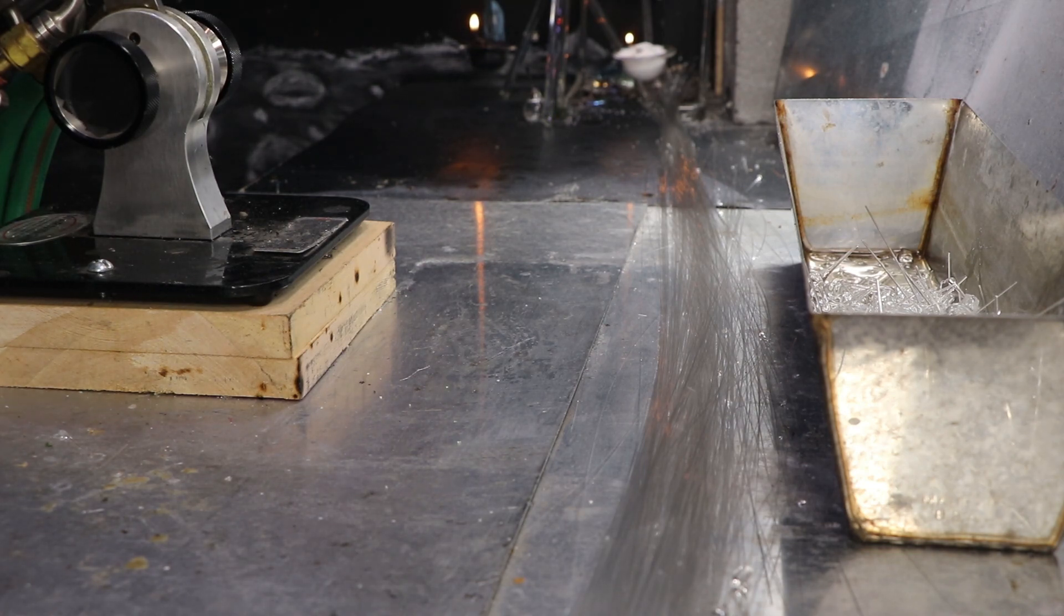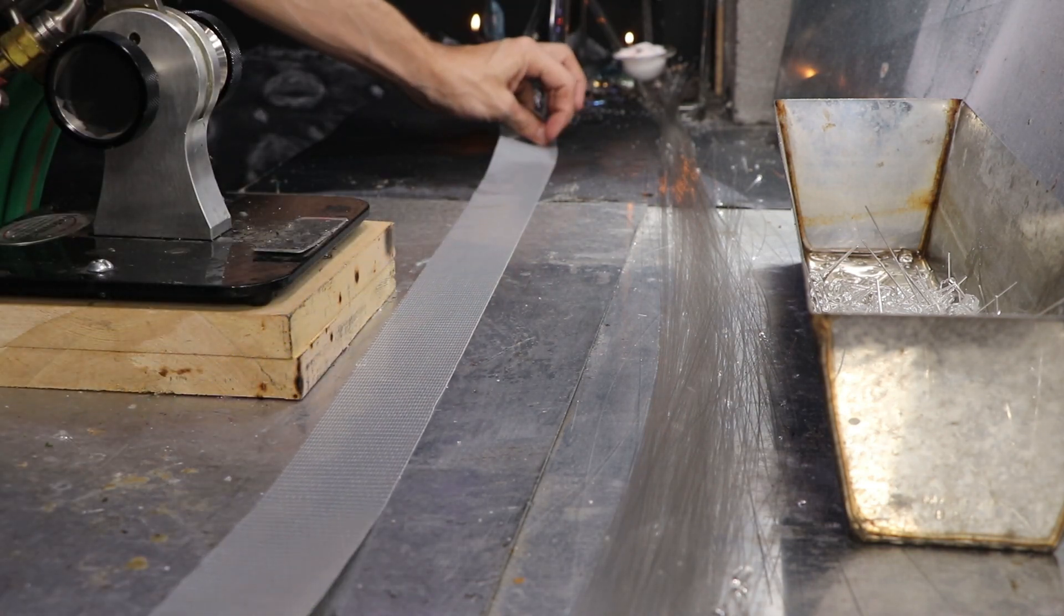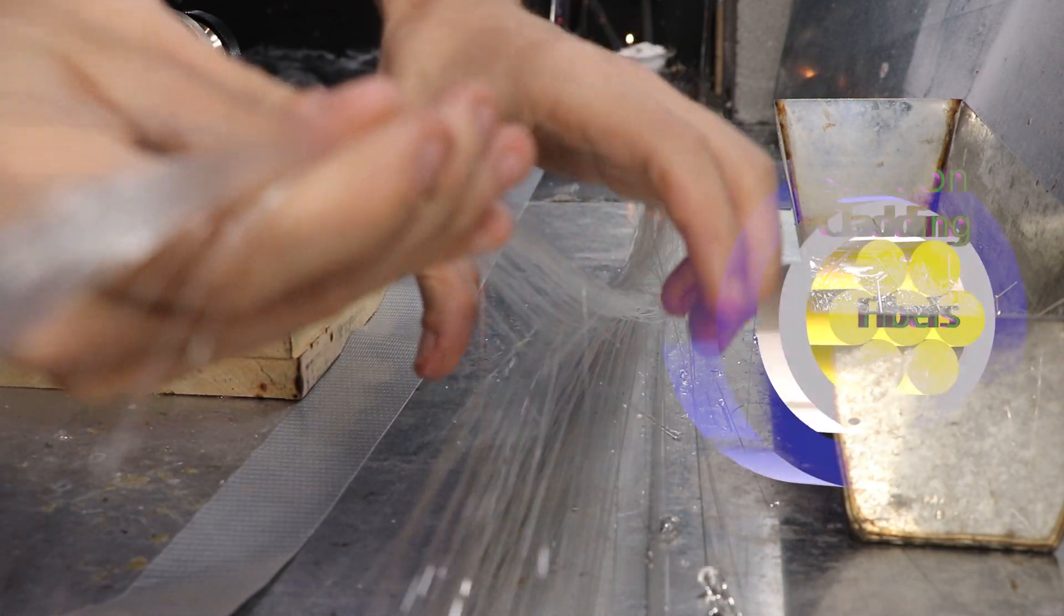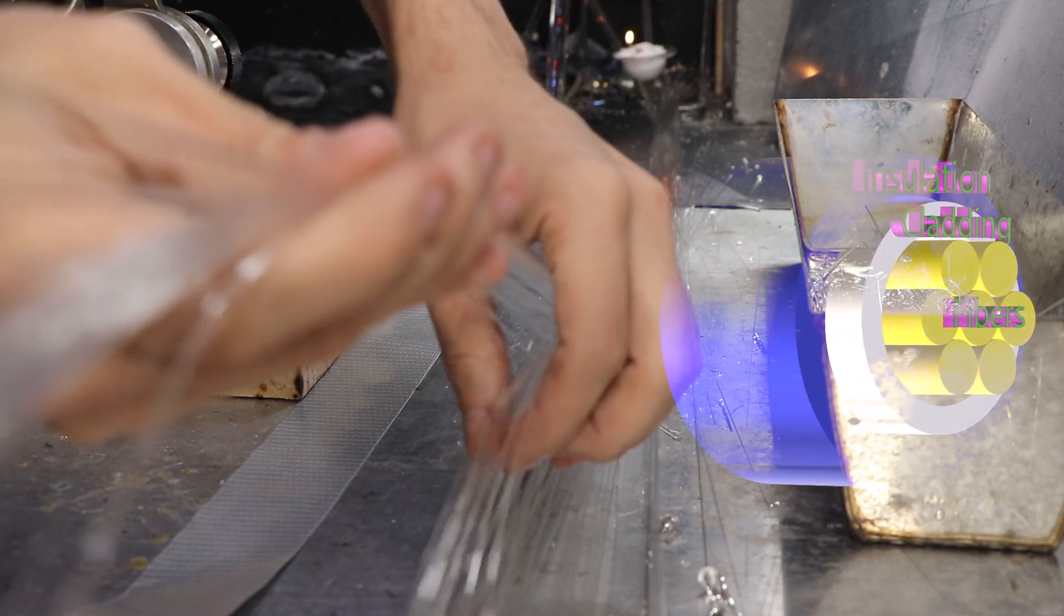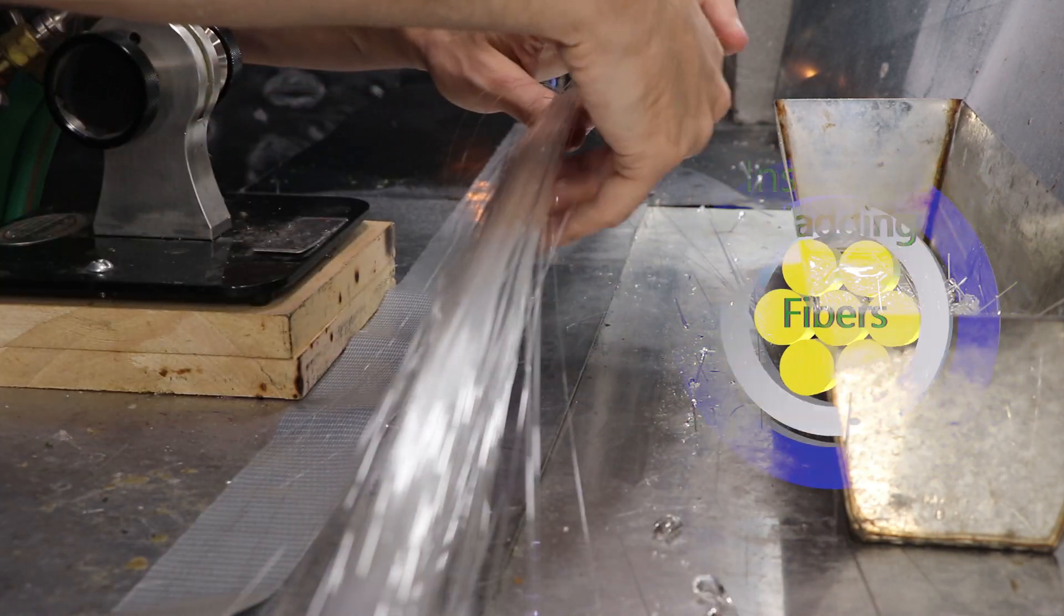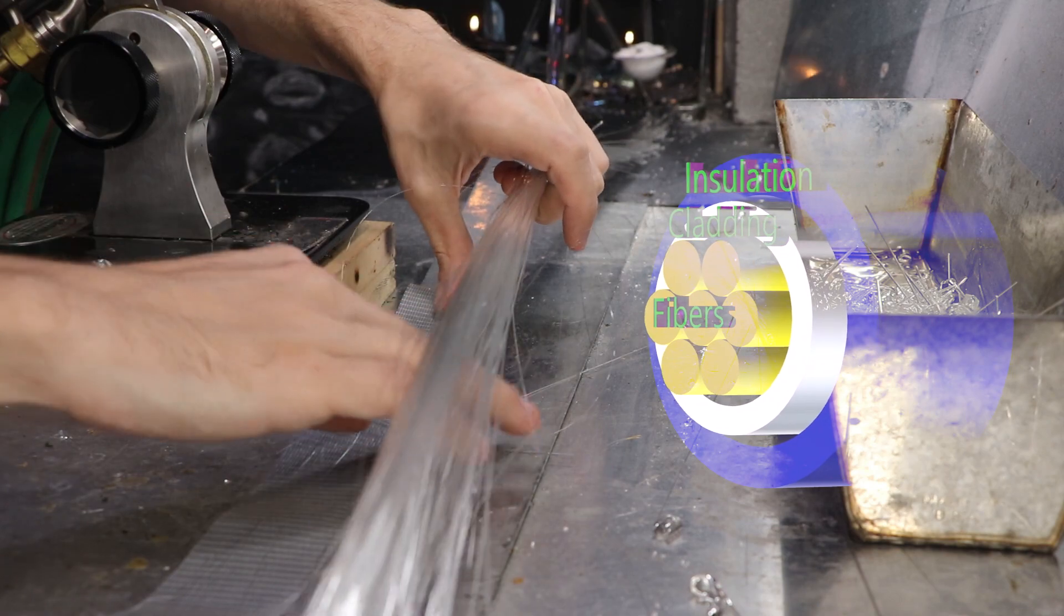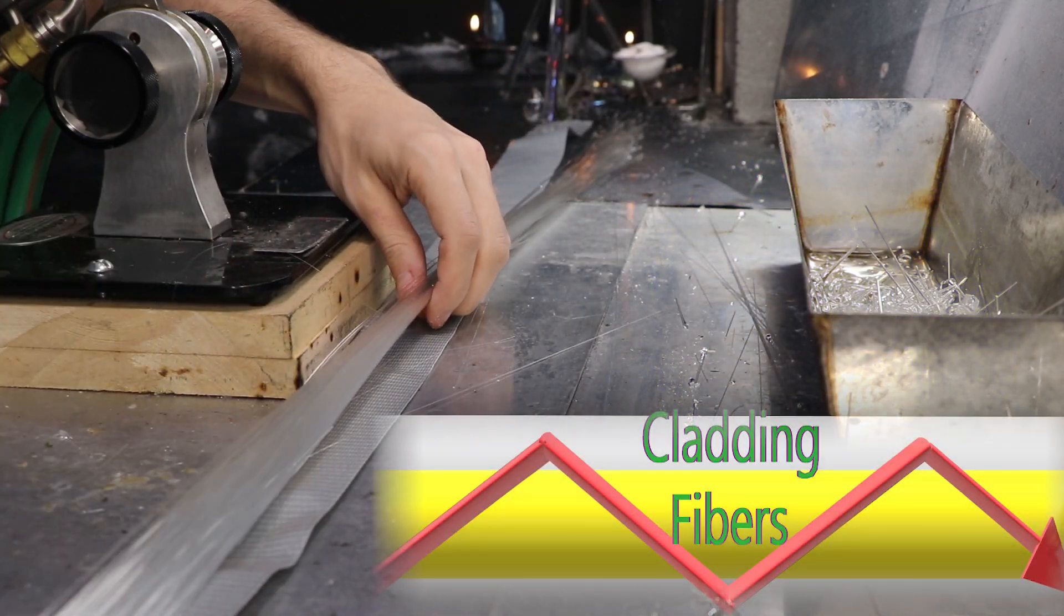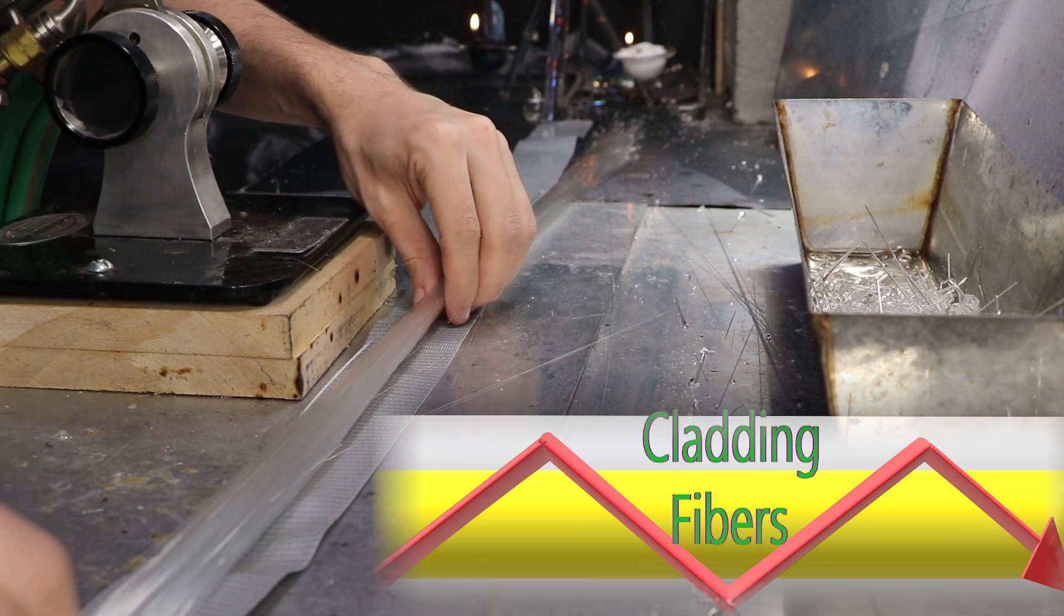Some shiny adhesive tape might work. There's normally a material layered around the outside of the fibers called the cladding. It needs to have a lower refractive index, which means it'll bend any escaping light back in to the core.